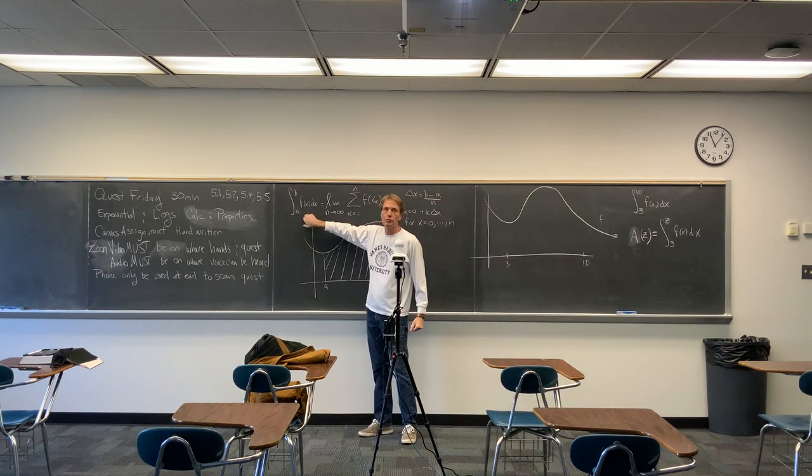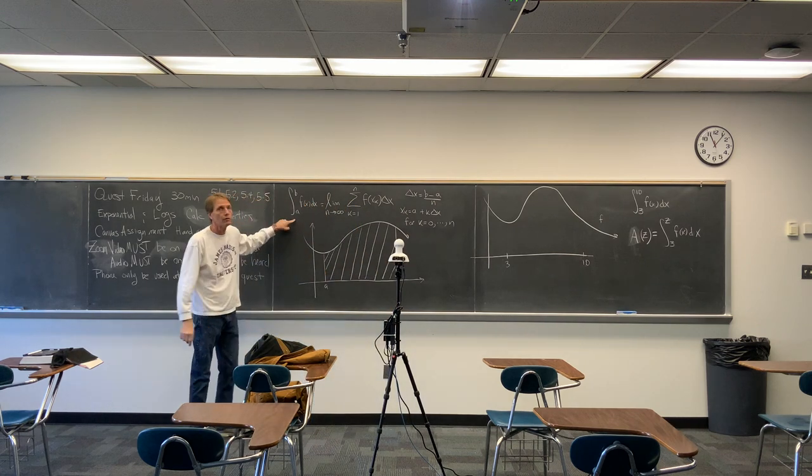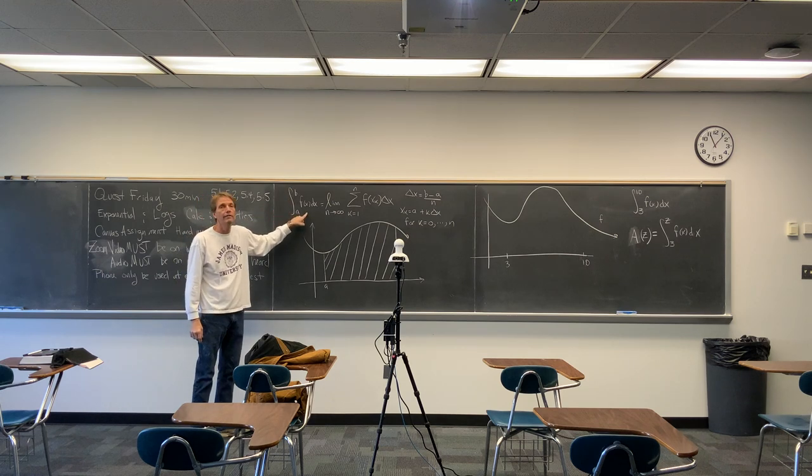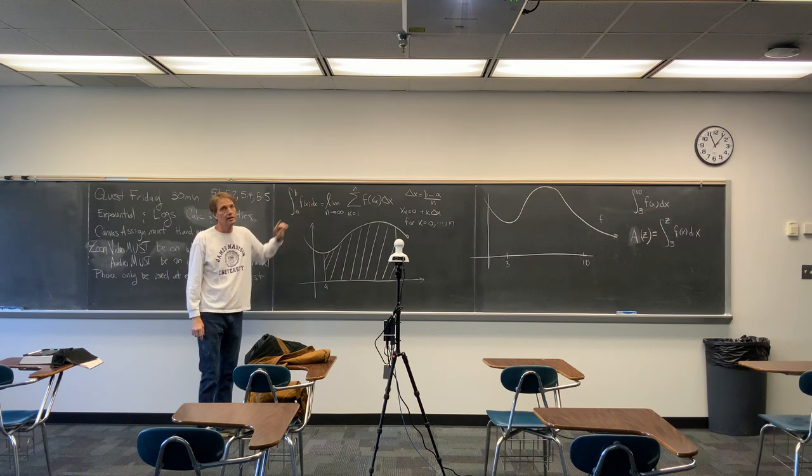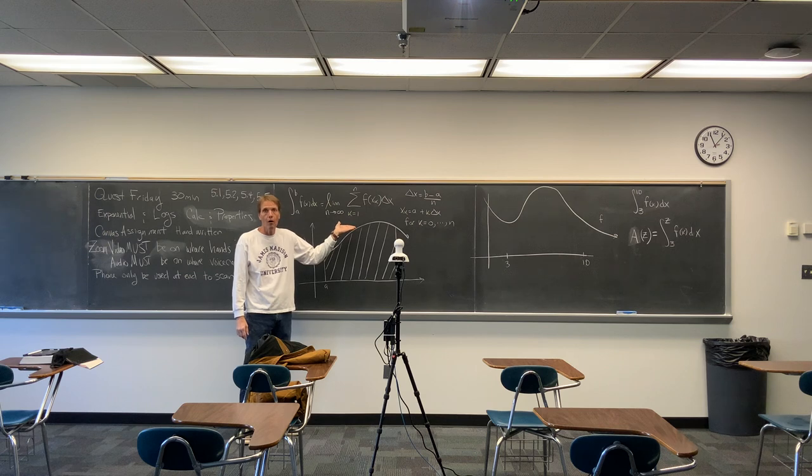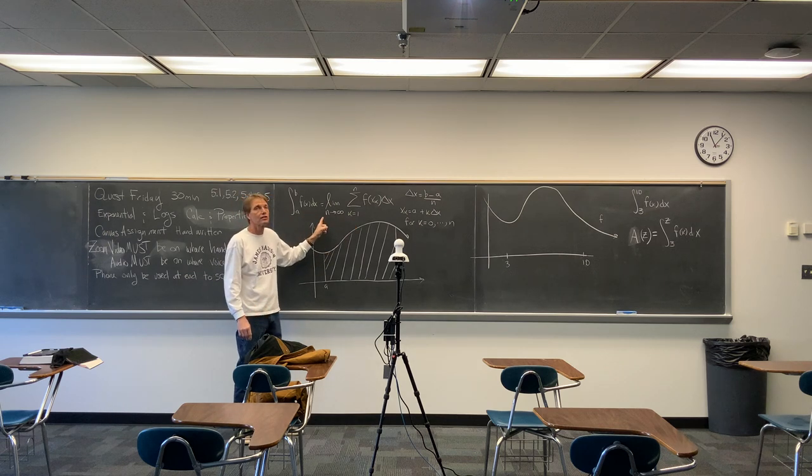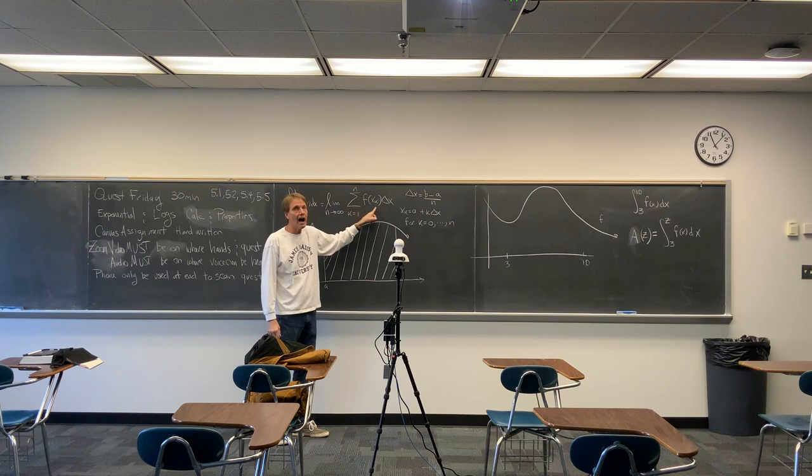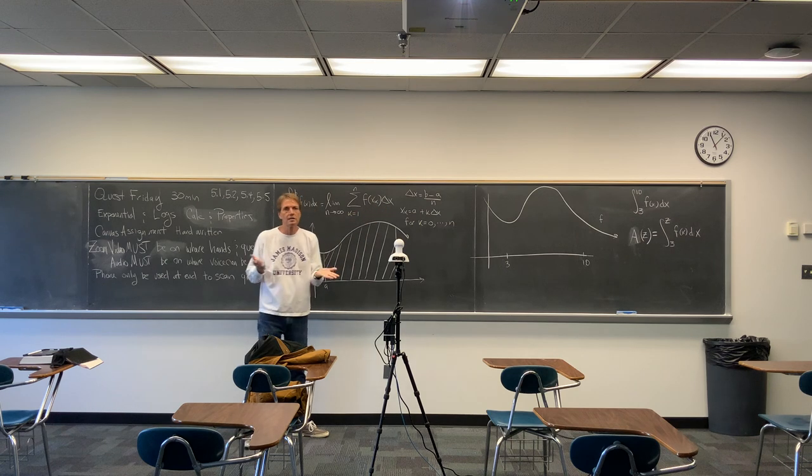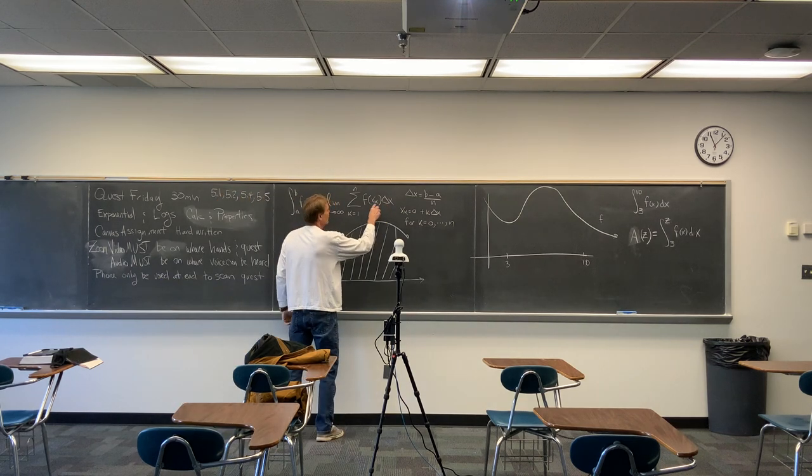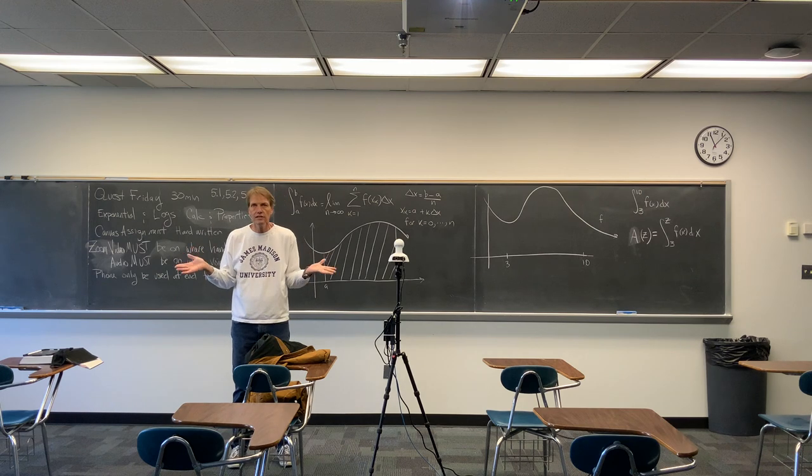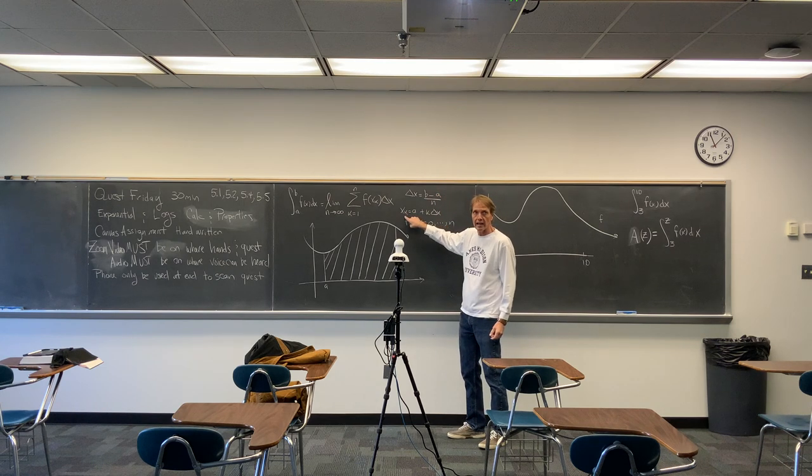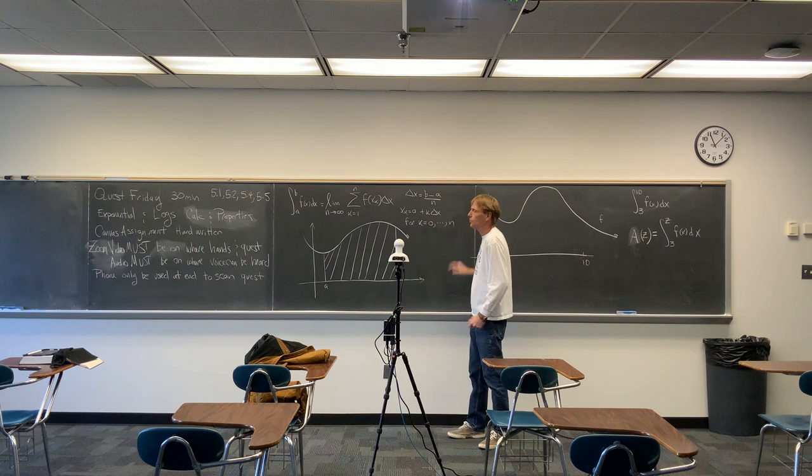We've been talking about the definite integral. Read this to me. The definite integral from A to B of f(x) dx. This could be buried in a true-false question on the final quest. It's the limit as N approaches infinity of the sum from K equals 1 to N of f evaluated at X sub K times delta X. If you don't explain who the delta X is and the X sub K's are, then it's false. The delta X is (B - A)/N, and the X sub K's are equal to A plus K delta X as K goes between 0 and N.